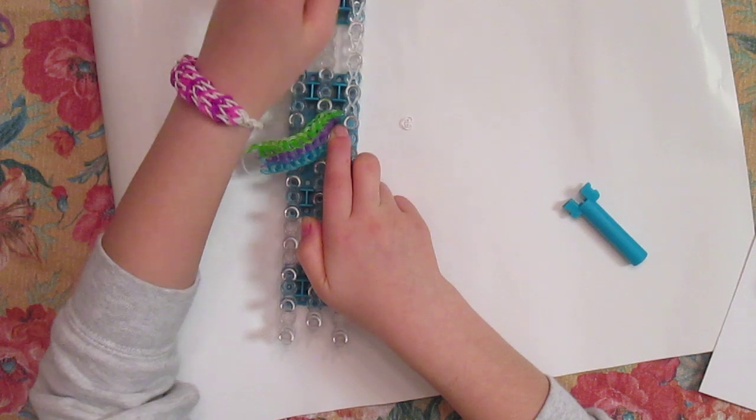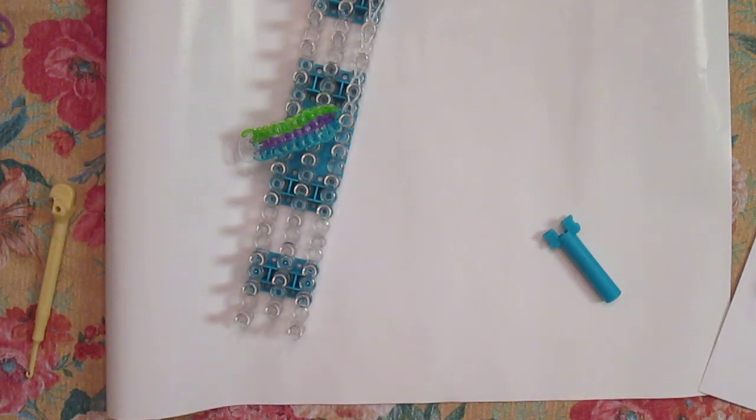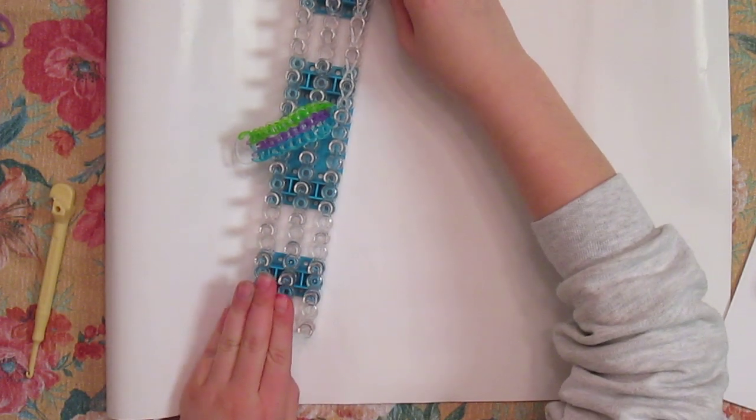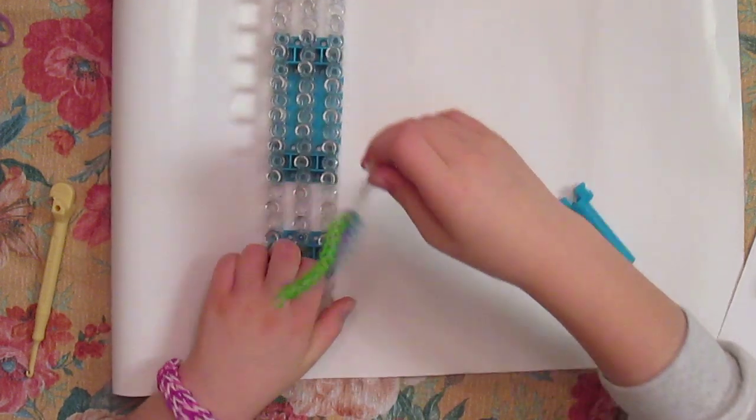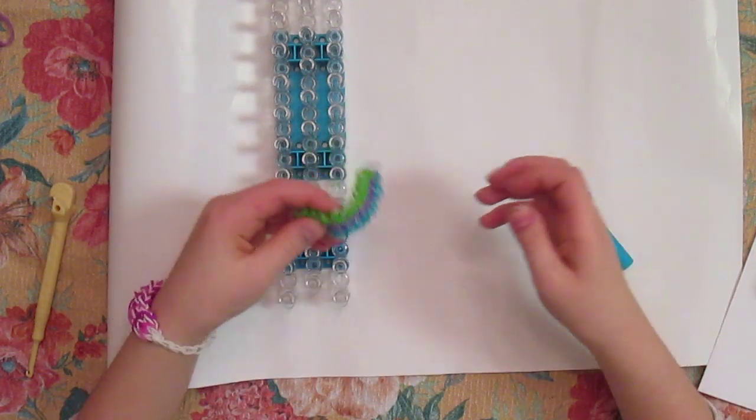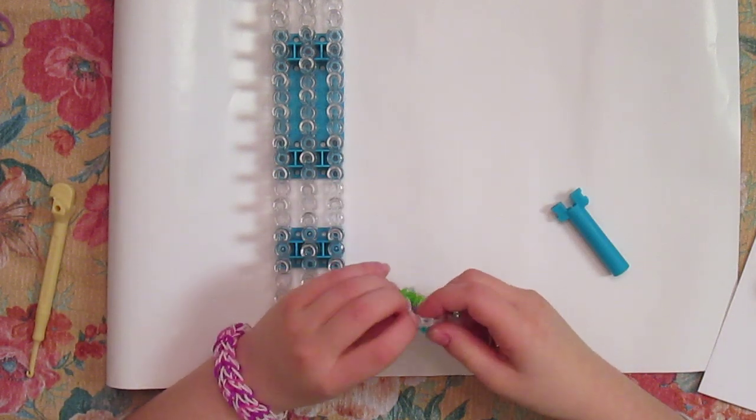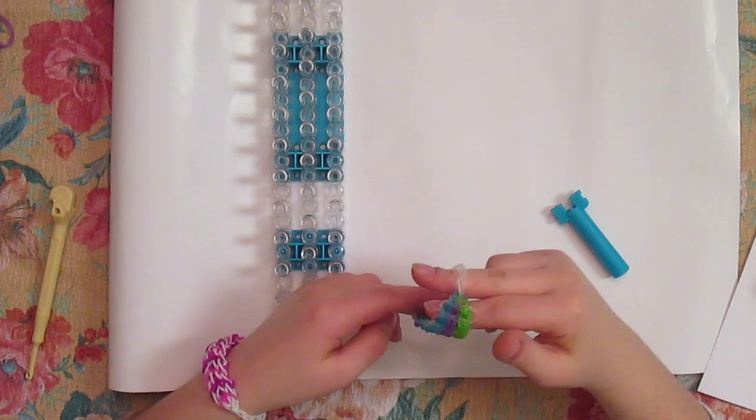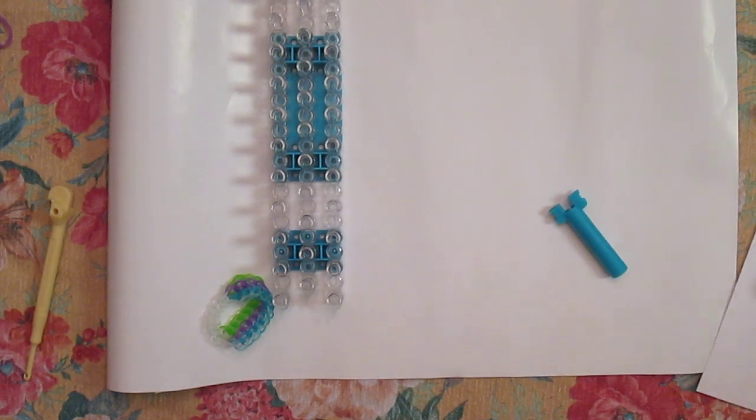And when you get to the end, take your C clip or your S clip and just take it upside down and then scoop it in. And then take it and pull it off your loom. This is what your bracelet will look like. It's bigger now. Now take the other end and then put it on. And there you have a triple single.